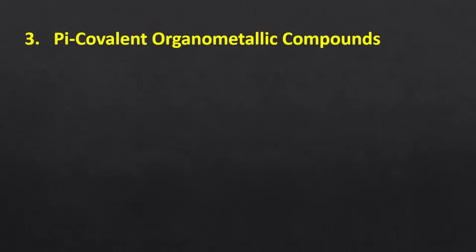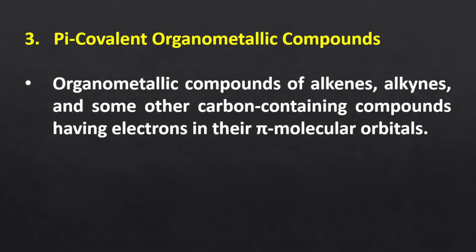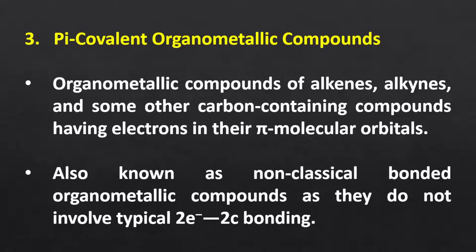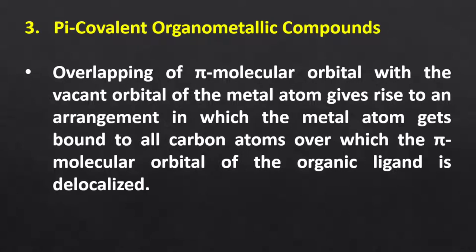The third type is pi covalent organometallic compounds. This category includes organometallic compounds of unsaturated carbon like alkene, alkyne, and other carbon-containing compounds having electrons in their pi molecular orbitals. They are also known as non-classical bonded organometallic compounds as they do not involve typical 2-electron 2-center bonding. The pi molecular orbital of the organic moiety overlaps with the vacant orbital of the metal atom, so the metal atom gets bound to all carbon atoms over which the pi molecular orbital is delocalized.